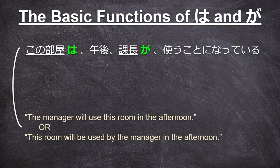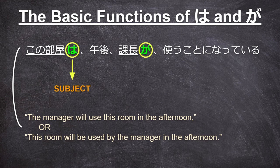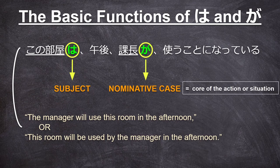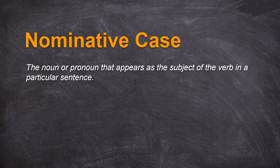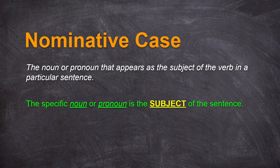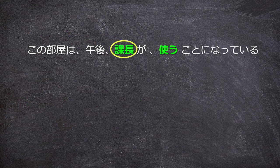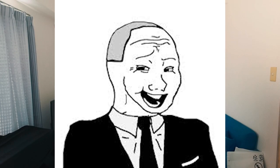The manager will use this room in the afternoon, or this room will be used by the manager in the afternoon. In this sentence, the wa in 'kono heya wa' indicates the subject or what we're talking about, and the ga in this sentence indicates the nominative case or the core of the action or situation. The nominative case basically refers to the noun or pronoun that appears as the subject of a verb in a particular sentence. So kacho is our noun and tsukau is our verb in our example sentence. Who's going to use the room? The manager is going to use the room.